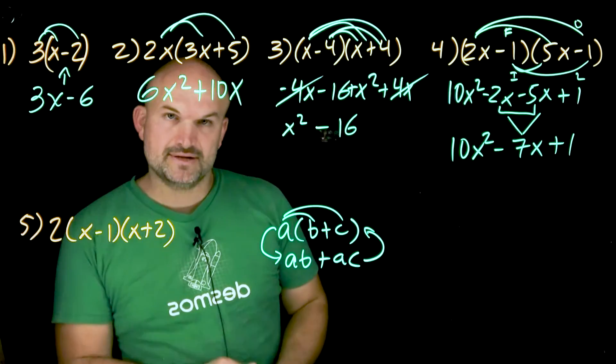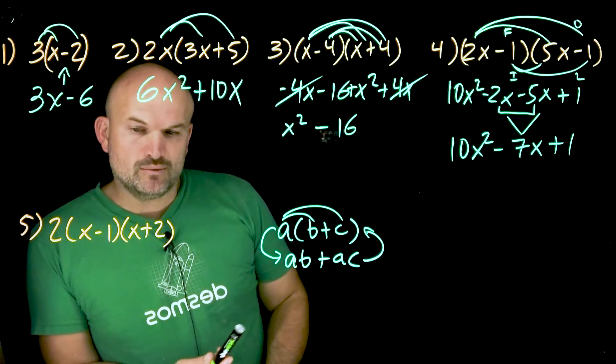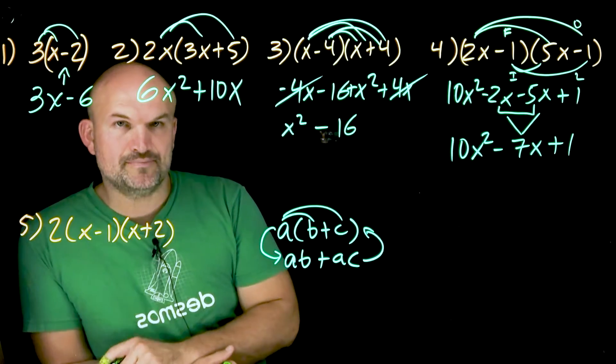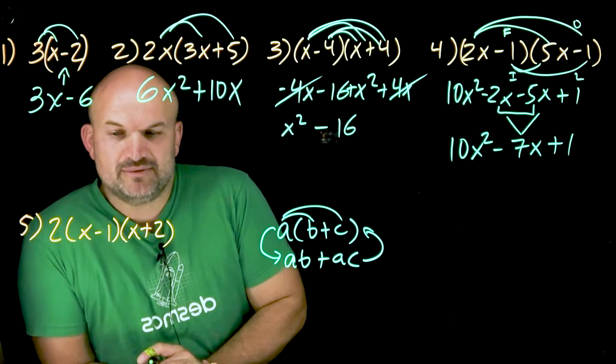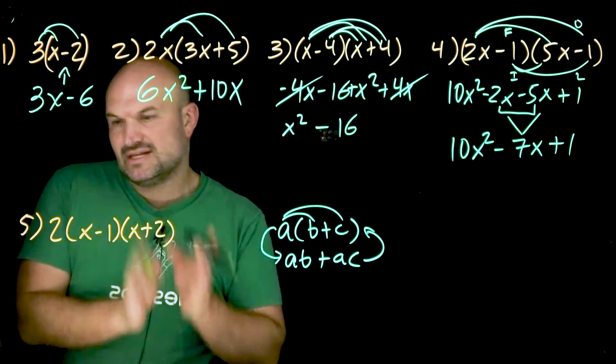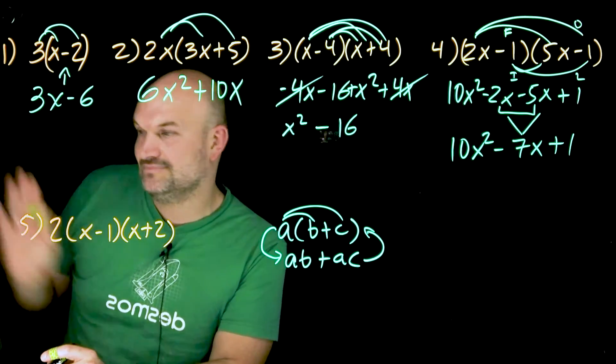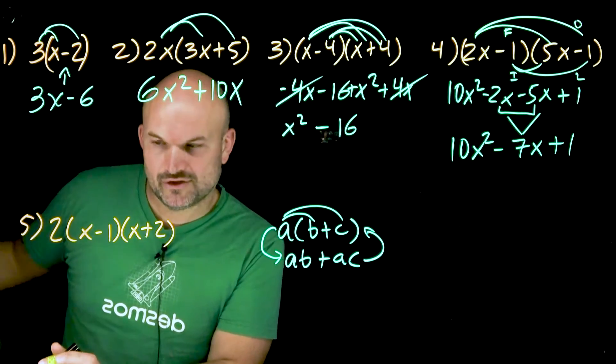Now, the last one, I threw in three terms because it's important for you to recognize when we need to do distributed property, we want to work one thing at a time. So I have a two times X minus one times X plus two. Now, thankfully, multiplication is commutative. So it doesn't matter which one you do first. I would just maybe recommend doing your two binomials first and then whatever scalar you have, then to go and do that. Or whenever you have like three binomials, if you know, you're moving on to something more advanced, just pick two at a time and then multiply everything by the third one.